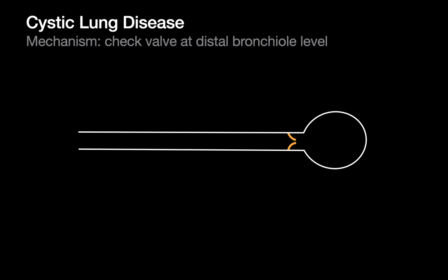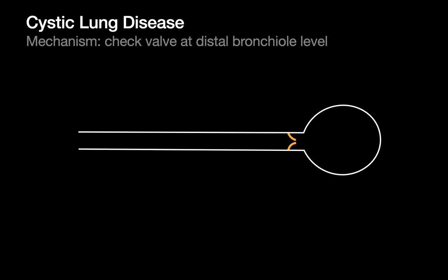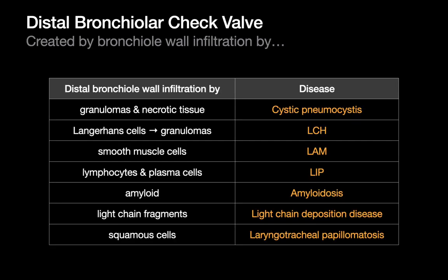The mechanism of cystic lung disease is basically the development of an effective check valve at the distal bronchial level that permits air to enter when a patient breathes in, but prevents air from leaving when the patient tries to breathe out. This check valve causes expansion of the distal airspaces. It's created by infiltration of the distal bronchial wall — whether by granulomas in cystic PJP or smooth muscle cells in LAM — but the mechanism is similar.